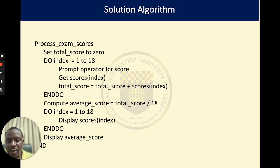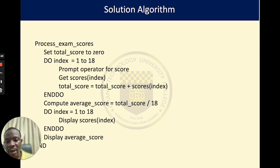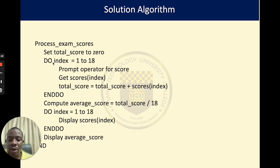How do we approach this? First, we start by setting a variable called total score to zero. If we want to prompt, we need to know how to receive scores from the user and then calculate. For an individual score, we use the keyword 'prompt' to prompt for a score, then get the score. Because we are doing this for 18 students, we have to repeat this 18 times, so we use the do loop.